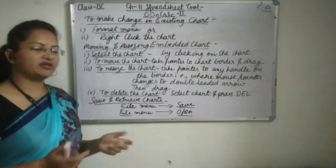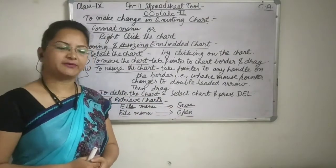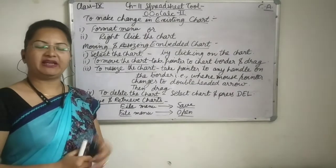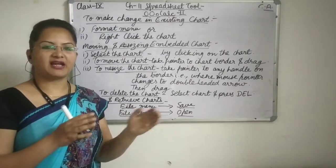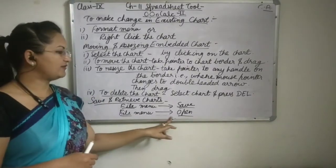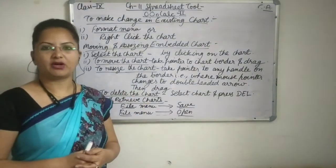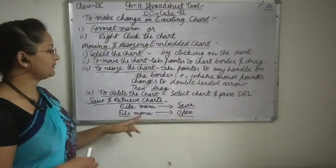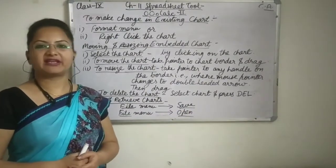Now to delete the chart — simply select the chart by clicking on it and then press the delete button on your keyboard. Now save and retrieve the chart. To save the chart, simply in the file menu you can click on save — the whole chart and table will be saved in a particular workbook. When you want to open it, click on file menu and choose open option — the whole workbook will open and you will be able to see the saved worksheet and chart. Shortcut keys are also available to save and open the document.